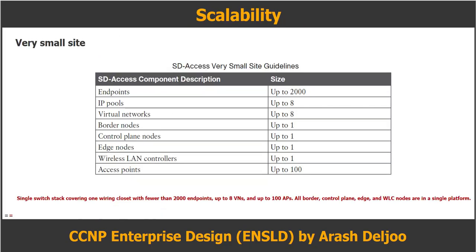This figure shows the use of three VNs for macro segmentation along with scalable group tags, or SGTs, for micro segmentation. About SD Access design scalability, site reference models can be leveraged to scale the SD Access fabric from very small to large site sizes. A very small site consists of a single switch stack covering one wiring closet with fewer than 2,000 endpoints, up to 8 virtual networks, and up to 100 APs.